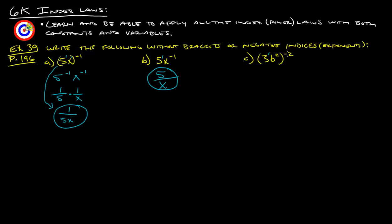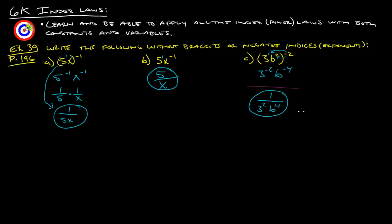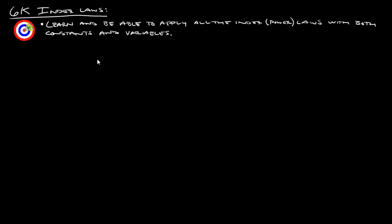For (3b squared) to the negative 2nd: distribute the negative 2 to both, giving 3 to the negative 2nd and b to the negative 4th. Since both are negative, move them to the denominator: 1 over 3 squared b to the 4th. That would be just fine, or you could write it as 1 over 9b to the 4th — either way.